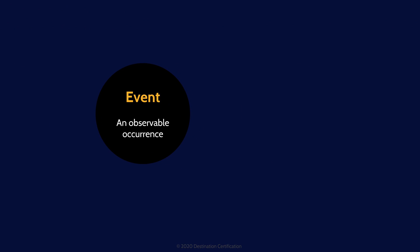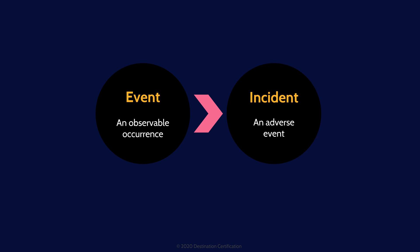Before we get into the incident response process, let's define two terms. We'll start with an event. An event is an observable occurrence. Someone logging in is an event. A file being written to a drive is an event. Someone scanning the external firewall is an event. We do not particularly care about the vast majority of events. Now, what is an incident? An incident is an event that negatively impacts the organization in some way. A server crashing, a password being brute forced, an attacker getting through the firewall — these are all incidents. We definitely care about incidents.